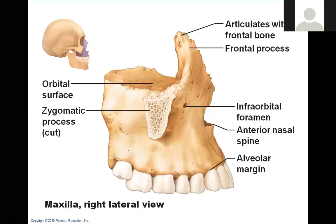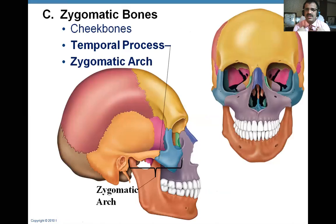Zygomatic bones are paired, so we call them zygomatic bones. They are also called cheek bones — just like the clavicle is called the collar bone, the mandible is called the chin bone, and the hyoid bone is called the throat bone. Zygomatic bones have a temporal process, which takes part in formation of the zygomatic arch. Together with the portion of the temporal bone, they form the zygomatic arch. The major part of the cheek is formed by the zygomatic bone on the side of maxilla.